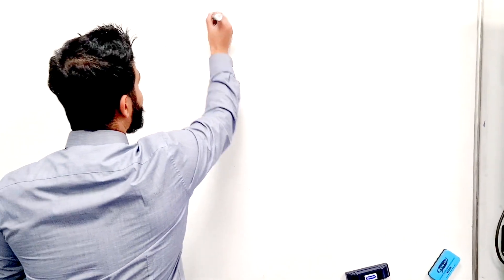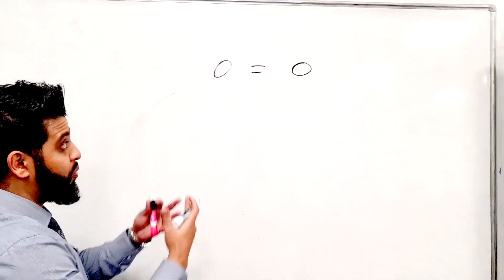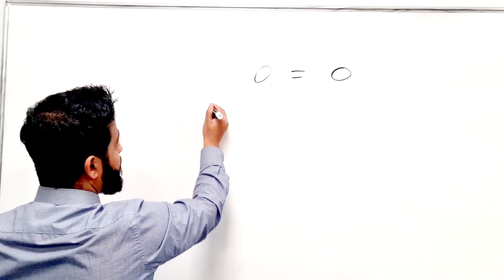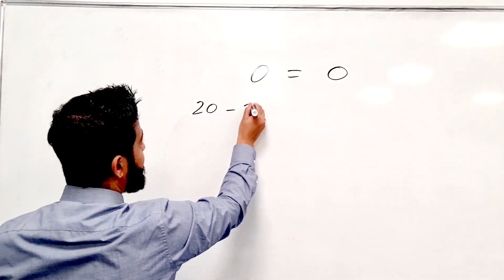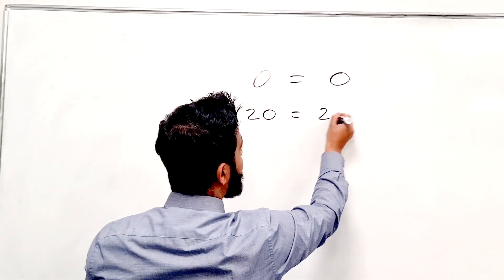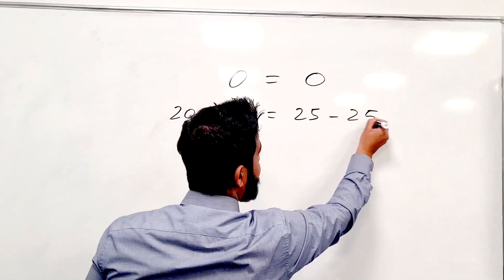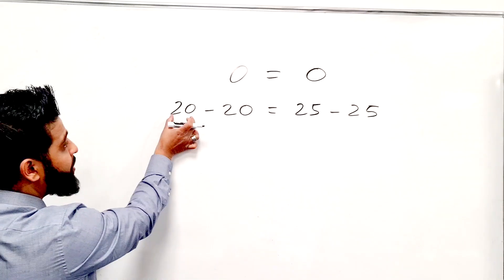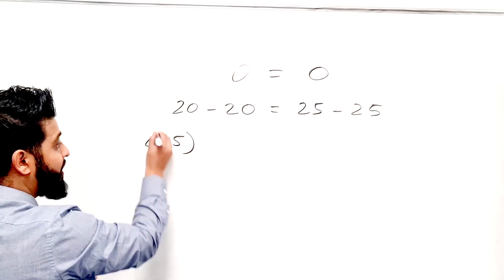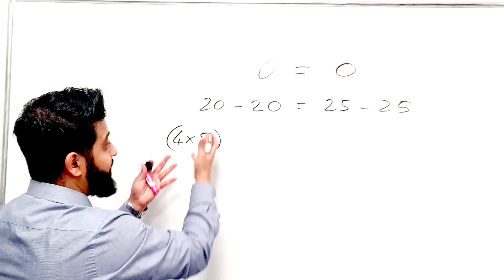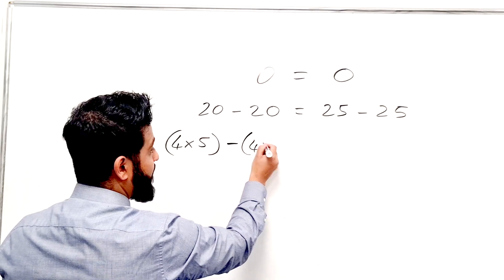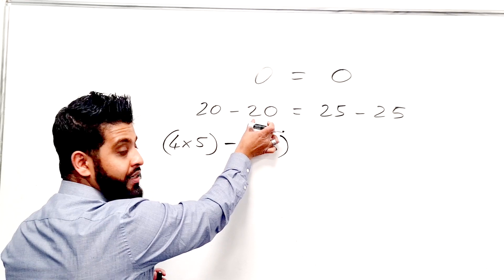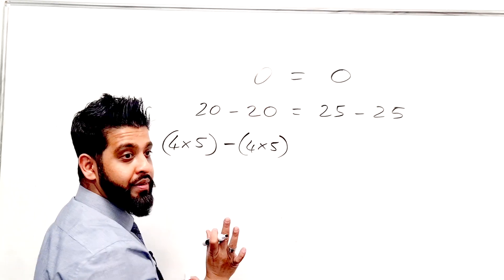Let's start off with 0 is equal to 0. You all agree that's a fact. I'm going to rewrite this part. So I'm going to have 20 minus 20 is equal to 25 minus 25. That's 0 and that's 0. I'm going to rewrite 20 as 4 times 5. You will all agree that 4 times 5 is 20, and therefore this is also going to be written as 4 times 5. So that's still 20 minus 20, which is 0.